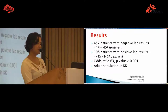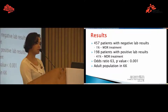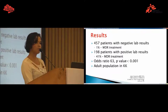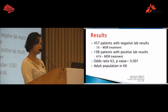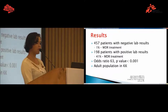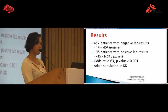From the 457 patients with negative laboratory results, only 1% were started on drug-resistant treatment. From the 198 patients with positive laboratory results, 41% were diagnosed with MDR tuberculosis. The odds ratio between these two groups is 63, with a P-value less than 0.001. For comparison, in the adult population in Karakalpakstan, a 2011 survey showed that 40% were started on drug-resistant treatment.